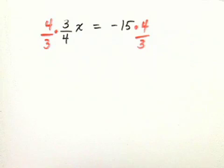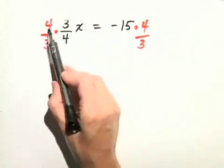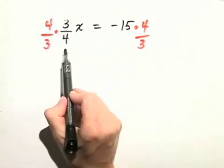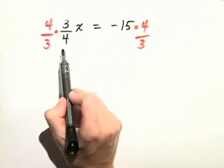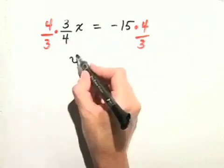Now what happens when we multiply a number by its reciprocal? Well notice if you did, you would get 12 in the numerator and 12 in the denominator. 12 over 12 is just 1, so we're really left with 1x or just x.